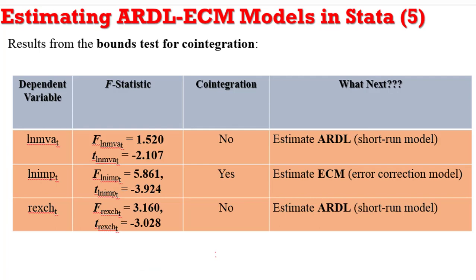On the table is the outcome of the bound test for cointegration when each variable was used as a dependent variable. The outcome indicates that only the log of IMP showed evidence of cointegration among the variables.